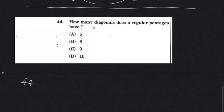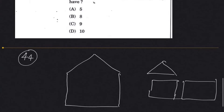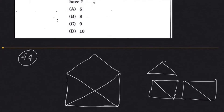Question 44: How many diagonals does a regular pentagon have? A pentagon has five sides — unlike a triangle, square, or rectangle. So let's count the diagonals: 1, 2, 3, 4, 5. So there are 5 diagonals.